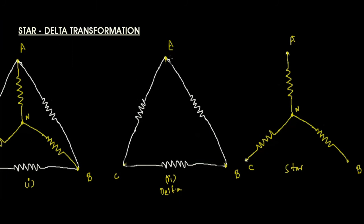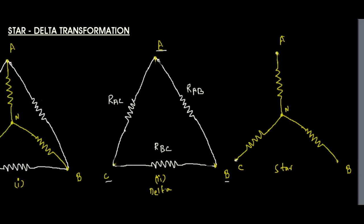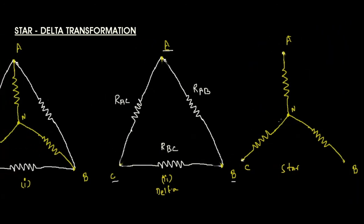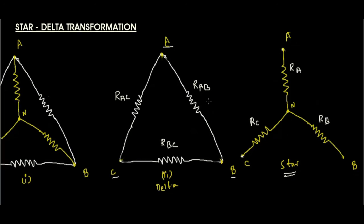In the delta connection, resistances are connected between these nodes: RAB between nodes A and B, RAC between A and C, and RCB (or RBC) between C and B. In the star connection, the resistances are: RA between A and neutral, RB between B and neutral, and RC between C and neutral.